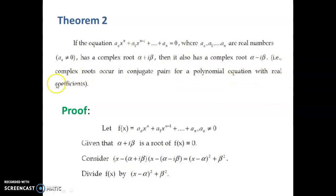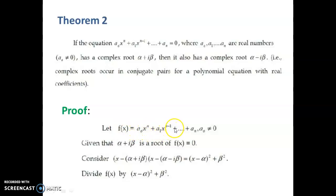Remember that the coefficients of this polynomial equation are real numbers. Now let us discuss the proof of this theorem. Here f(x) = a₀xⁿ + a₁xⁿ⁻¹ + ... + aₙ is the given polynomial function, and suppose alpha + i*beta is a root of the polynomial equation f(x) = 0.